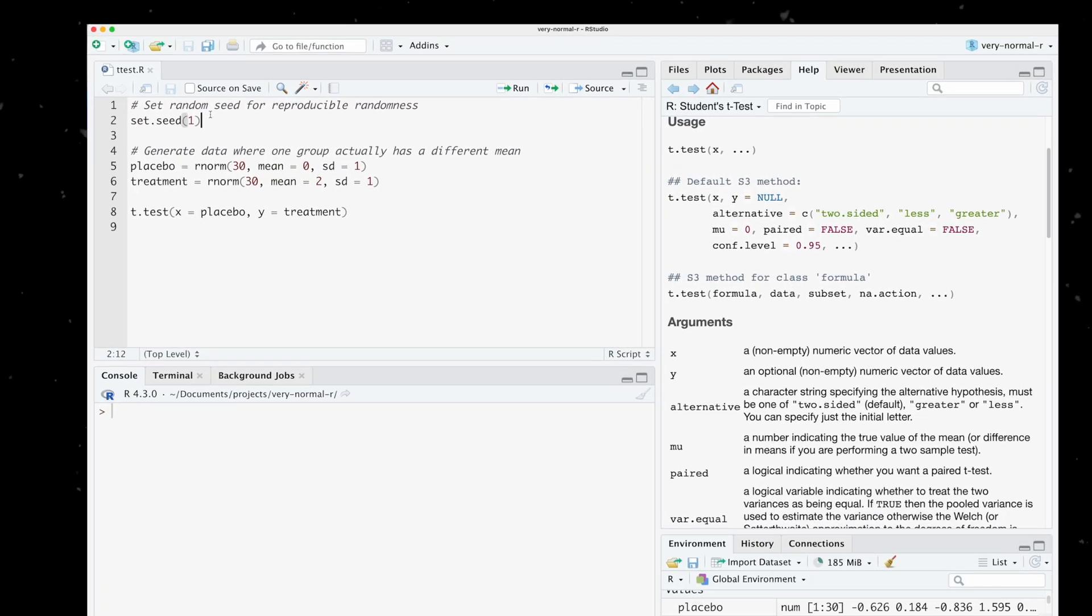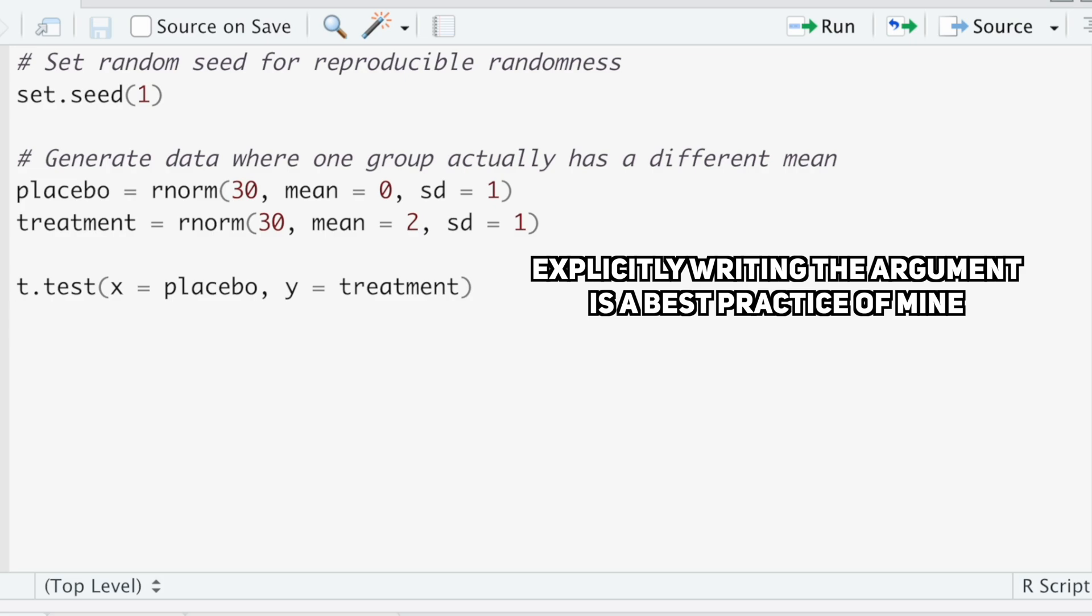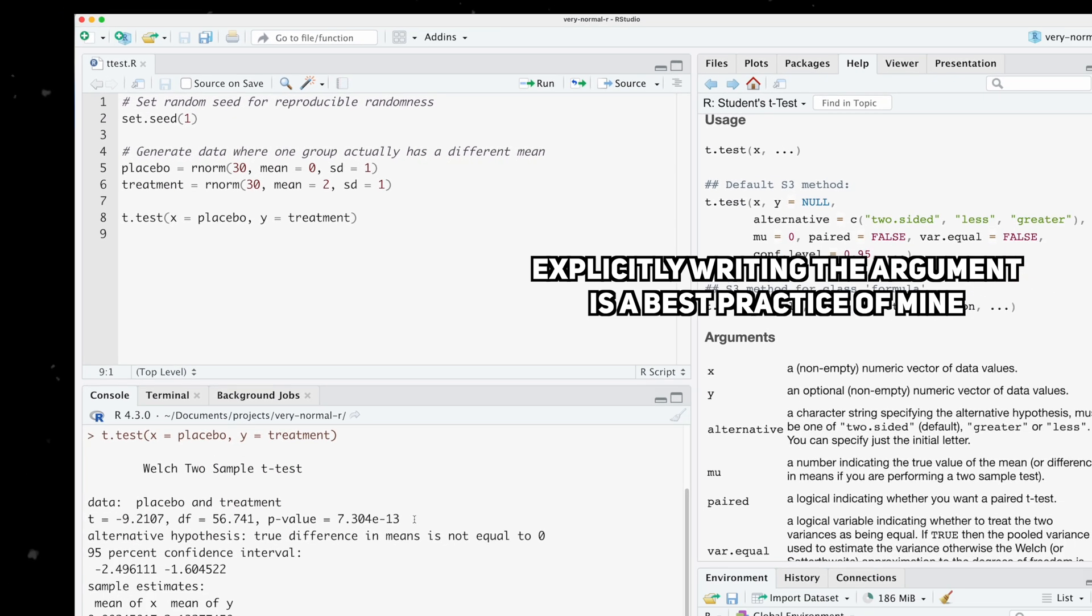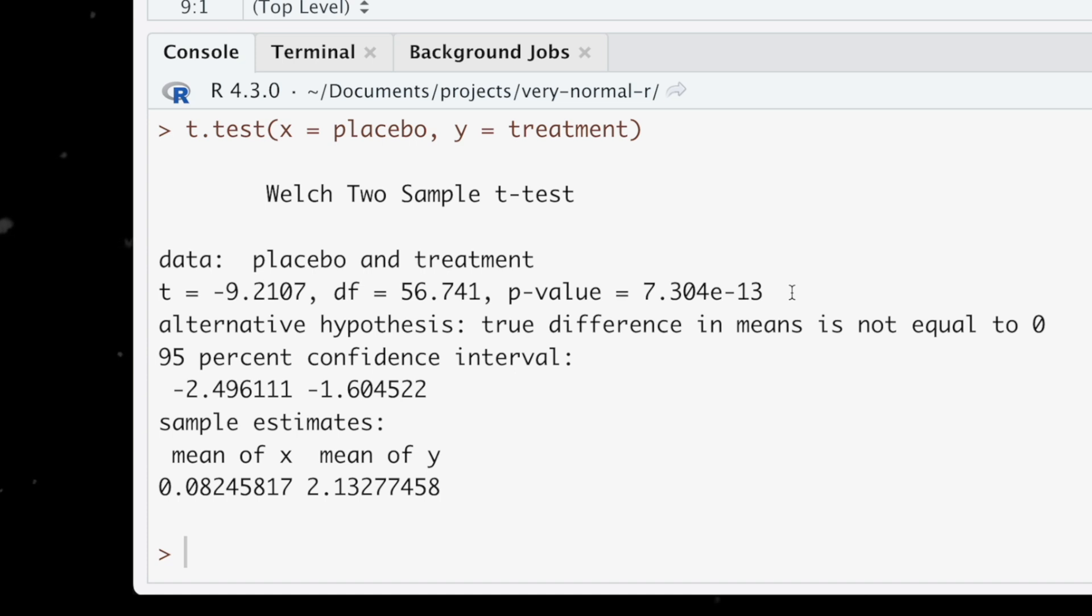Now, I'll pass these two vectors into the t-test function. I've written out the argument names here, but you don't actually need to do that. For me, it's a best practice, because it makes it faster for me to read and remember what I did if I need to come back to my own code. If we just run the function, then we'll see a nicely formatted output in the console which summarizes the results of the test.